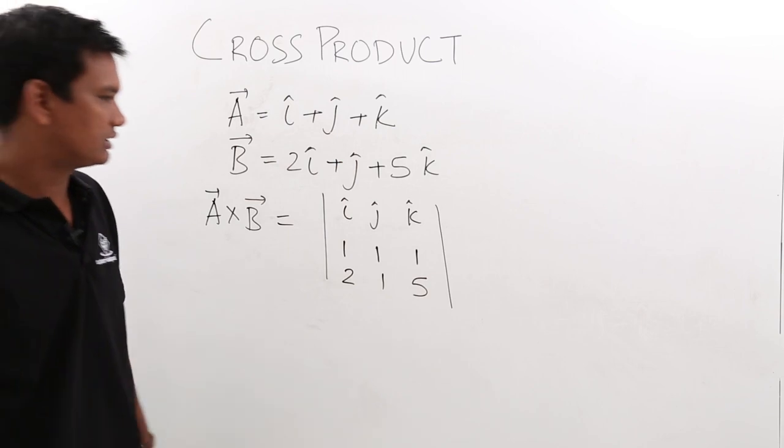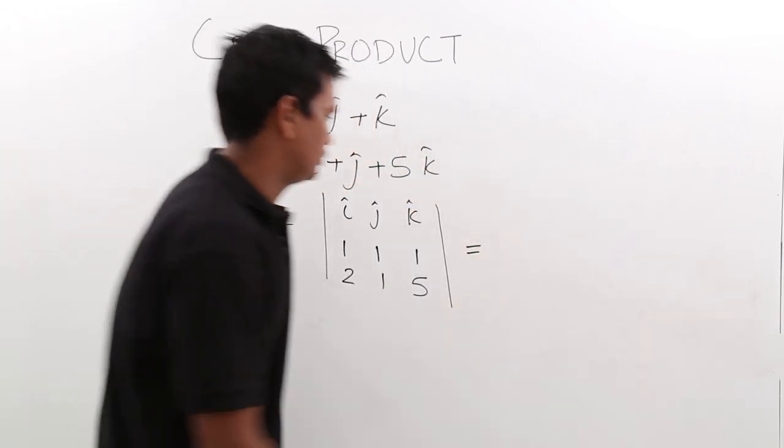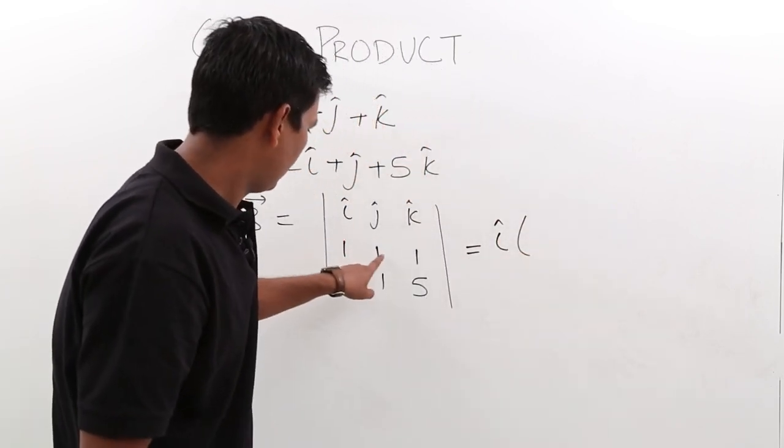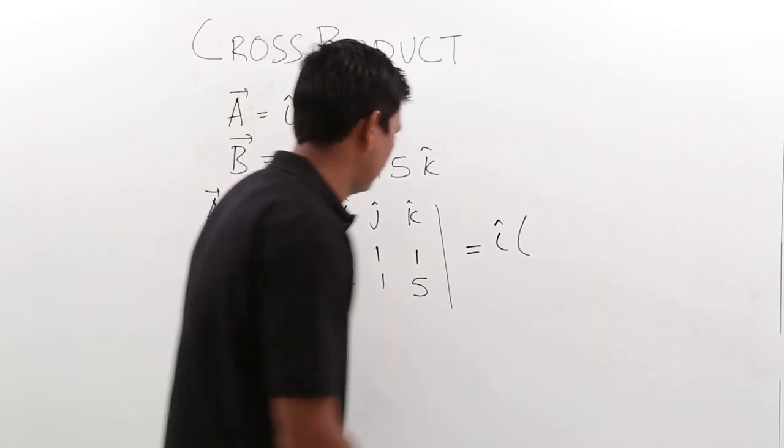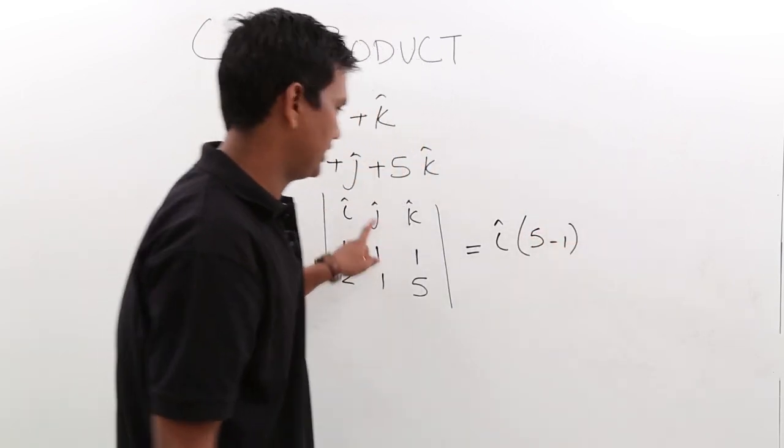Now, we have to solve this. My i cap would be 1 into 5 minus 1 into 1, which is 5 minus 1, minus j.